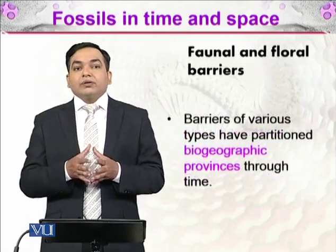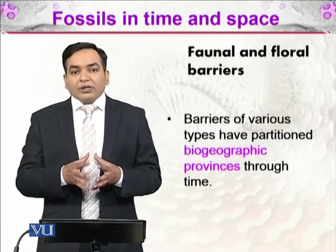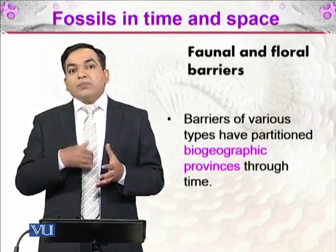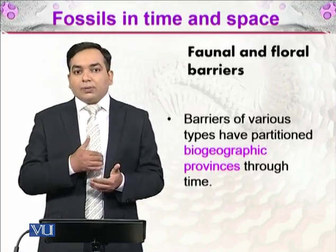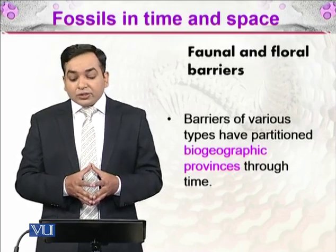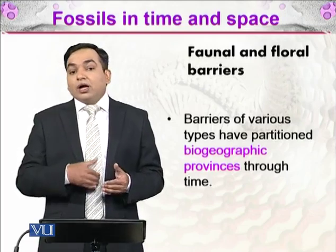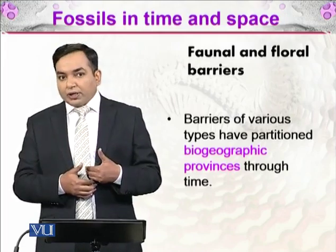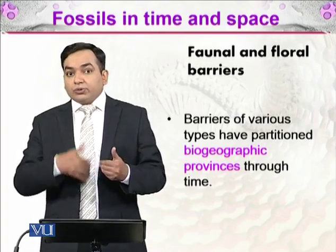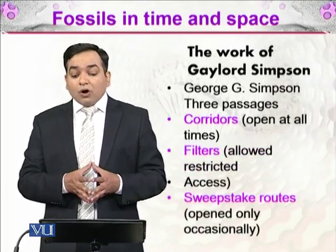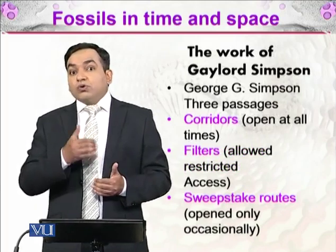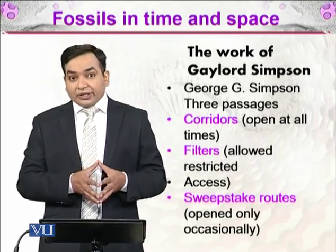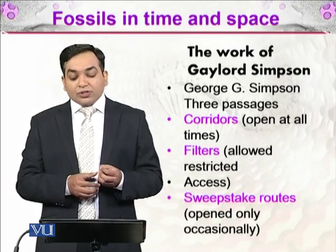When the Earth is divided into continents due to tectonic movement, barriers are formed and the movement of organisms is restricted. Barriers of various types have partitioned biogeographic provinces throughout time. For example, organisms living in North America could not go to South America, and vice versa. The work of George Gaylord Simpson described how organisms move through barriers: there are corridors which are open all the time, filters which allow restricted access, and sweepstake routes which are opened only occasionally.